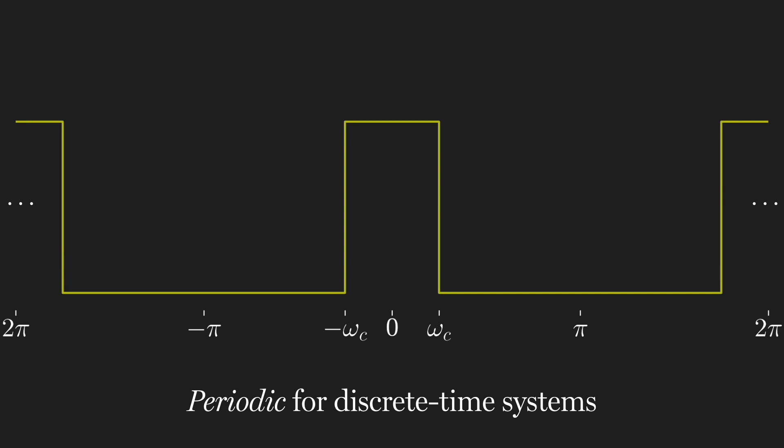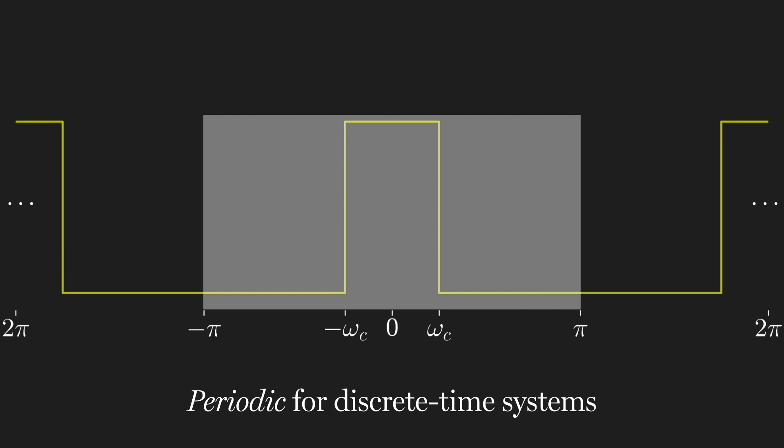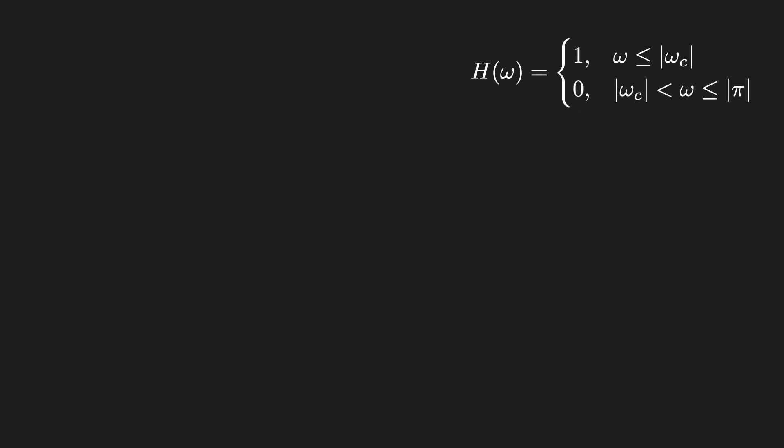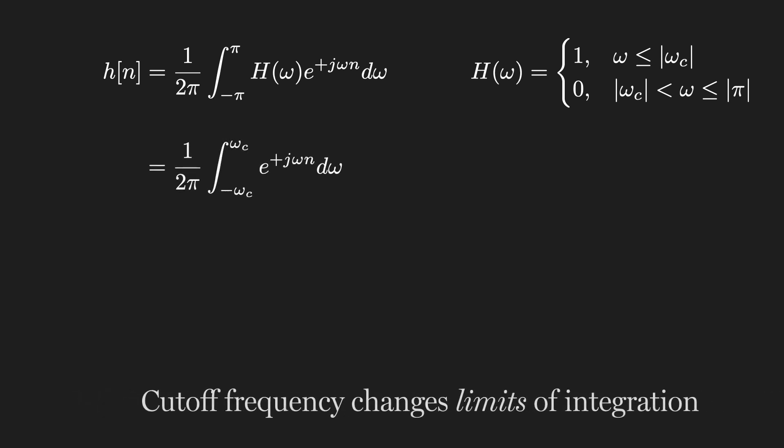But with the inverse discrete time Fourier transform, we only need a single period from minus pi to pi. So we can describe our ideal low-pass filter, capital H of omega, with this expression. To determine the impulse response, H of n, we put this expression for capital H of omega into the inverse DTFT.